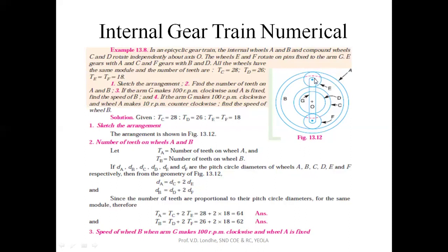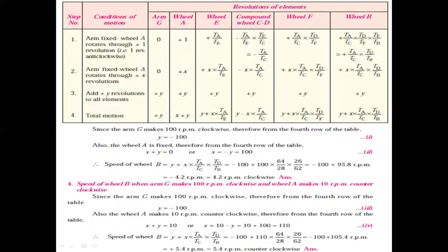If wheel A is having clockwise rotation, wheel C will have anticlockwise rotation. And if C has anticlockwise rotation, wheel D will also have anticlockwise rotation, so it will be minus TE/TC. For F, there is simultaneously clockwise motion. Then you add a plus X rotation to all elements. Third step: add Y revolutions to all elements — where the arm was fixed, it will now have Y revolutions. The last step is the total motion, which is the addition of step two and step three.